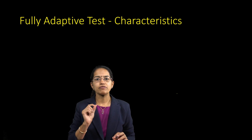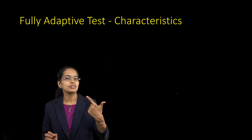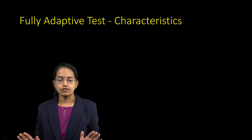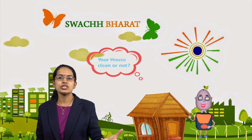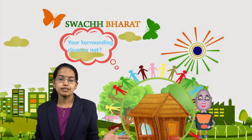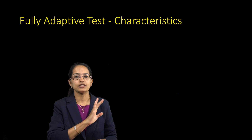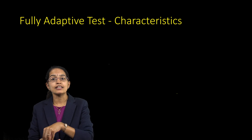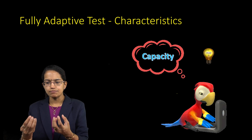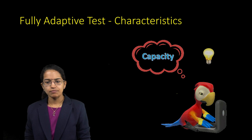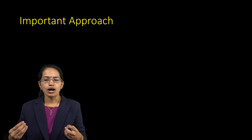Fully adaptive tests have certain important characteristics. First, all psychometric tests use item response theory (IRT) as the basic criterion — meaning the next question is based on your response, not solely on difficulty level. For example, if the first question is 'Do you keep your house clean?' the next might be 'Do you keep your surroundings clean?' — the follow-up is driven by the response. Pre-existing information about the examinee is also very important, enabling the system to gauge capacity and present one question at a time.